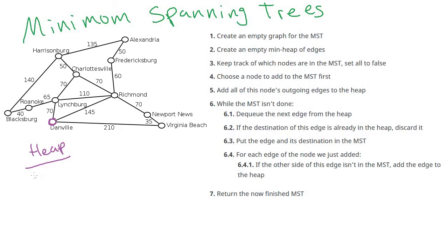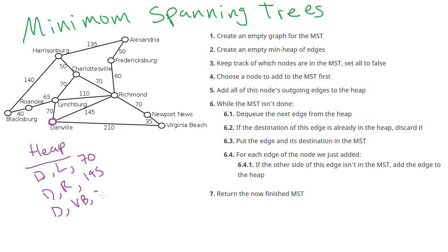The pseudocode says: create an empty graph for the MST and an empty min heap for edges. Keep track of which nodes are in the minimum spanning tree and set them all to false. Then choose a node to add first — let's choose Danville this time. We add that node to the MST, then add all of Danville's outgoing edges to the heap: Danville to Lynchburg for 70, Danville to Richmond for 145, and Danville to Virginia Beach for 210.